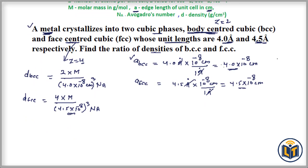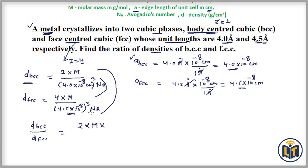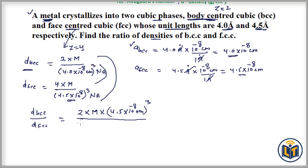Now we divide these two expressions to find the ratio of densities of BCC and FCC. D_BCC divided by D_FCC equals: numerator — 2 multiplied by M multiplied by (4.5 × 10⁻⁸ cm)³; denominator — 4 multiplied by M multiplied by (4.0 × 10⁻⁸ cm)³. The M and N_A terms cancel out from numerator and denominator.